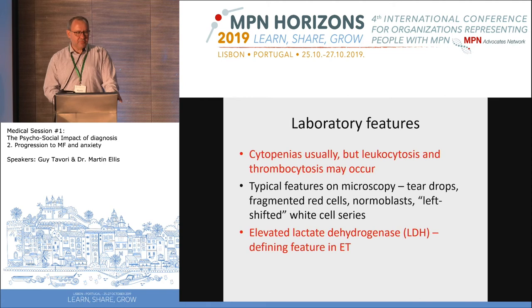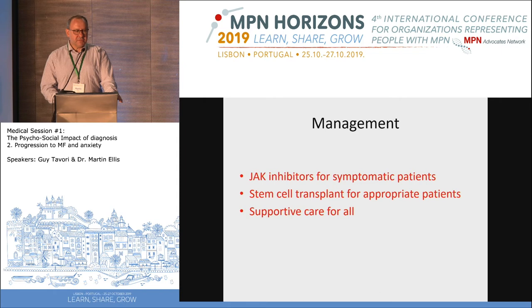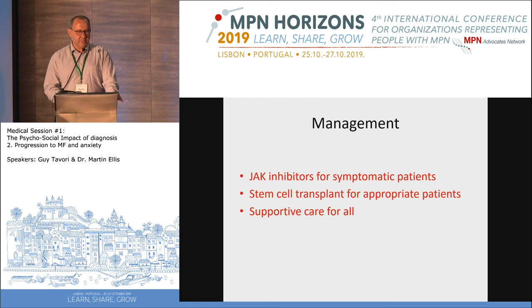Management aligns with management of myelofibrosis as a primary disease. If the patient is symptomatic, they need treatment. Today we use JAK inhibitors such as ruxolitinib and fedratinib for symptomatic patients with myelofibrosis, whether primary or transformed. In patients with an appropriate clinical profile and a stem cell donor, we look to perform allogeneic stem cell transplantation as a curative procedure — the only curative option. Supportive care addressing patients' symptomatic needs is essential for all patients.